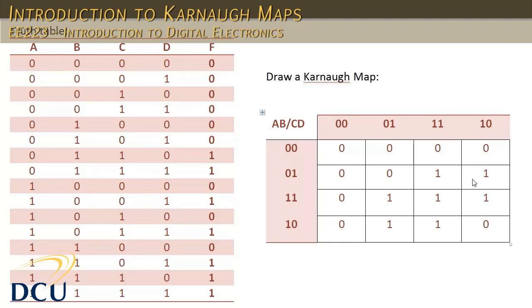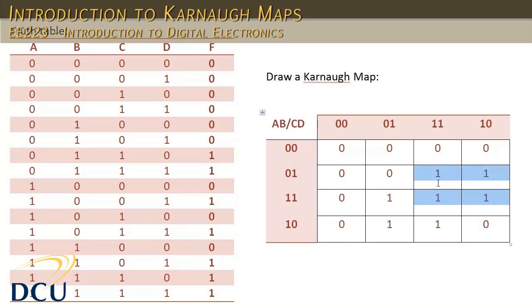We now have to group the cells together. We can group cells in combinations of one cell on its own, two cells together, four cells, eight cells, 16 cells and so on to the power of two. This allows us to provide a minimized expression for the overall system that we're creating. We could group these cells together, but we also have to maximize the amount of cells that are in a group. We couldn't, for example, create a group of three because it's not a power of two, or a group of six. We wouldn't be allowed to group them together.